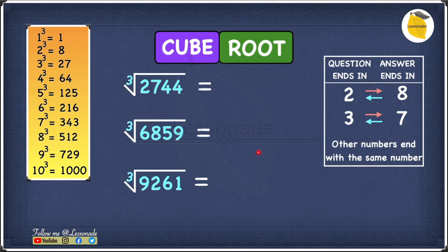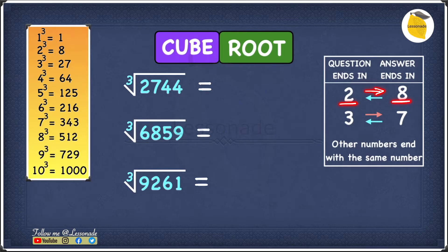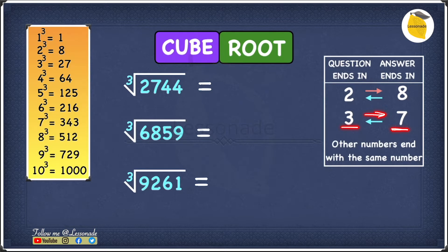Before we have a look at the questions, let's start by having a look at this table. In this table, we know that if the question ends in 2, then our answer will end in 8, and this is the same the other way around — if the question ends in 8, the answer will end in 2. So what about 3 and 7? If the question ends in 3, the answer will end in 7, and if the question ends in 7, our answer will end in 3.